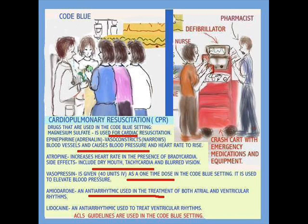Then we have vasopressin, which is used at 40 units as a one-time dose — for the patient in ventricular fibrillation it is not repeated. Then there's amiodarone, an antiarrhythmic used in the treatment of both atrial and ventricular rhythms. We also have lidocaine, which is also an antiarrhythmic, though I believe it's not used quite as frequently as it used to be. Twenty years ago it was used a lot more, but I've seen it used far less in recent times.